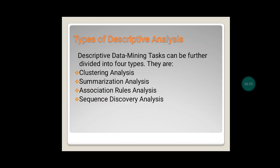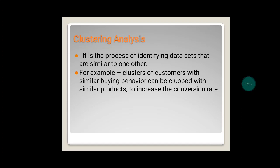There are four types of descriptive analysis tasks: clustering analysis, summarization analysis, association rule analysis, and sequence discovery analysis. Clustering is the process of identifying datasets that are similar to one another — data that seems similar is grouped into a particular set. For example, certain customers are more into electronic appliance shopping, others into clothing, and others into groceries, so we can categorize or cluster people into specific groups.